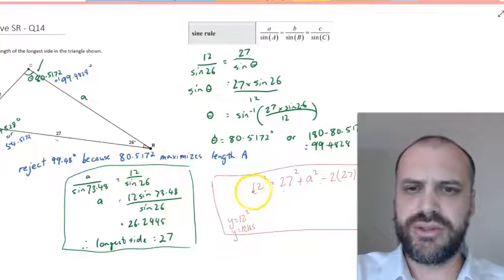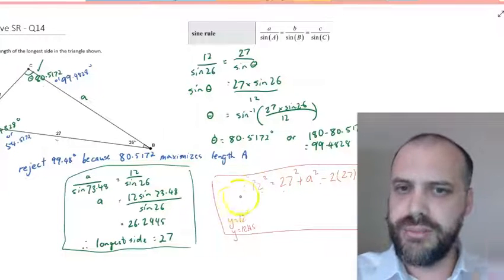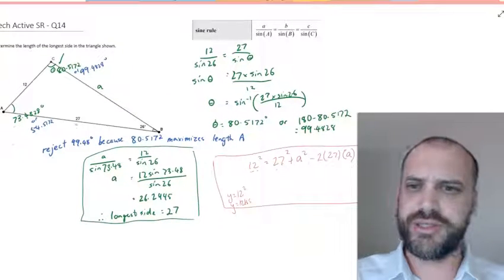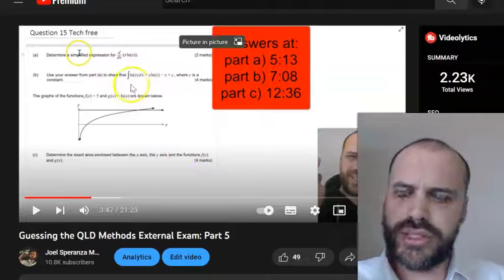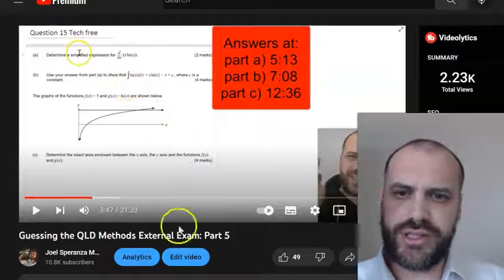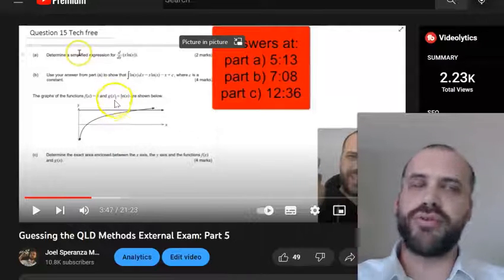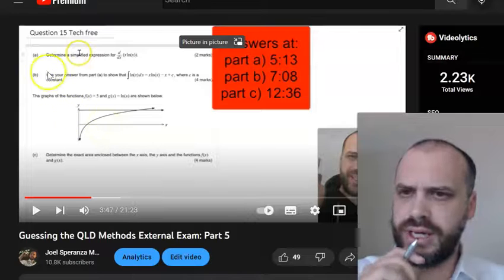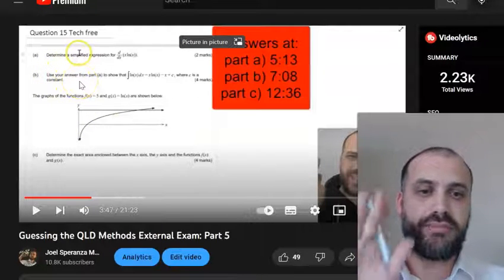One of those answers corresponds to the answer I found, 26.24. The other answer corresponds to the angle that I rejected in my first step. So do I think this is a better method? Yeah, I think it's a better method. I'm just a dinosaur, I guess. That's why I went with my method here. So this question, it was question 15, tech free. This is in part five. This was integration by recognition.